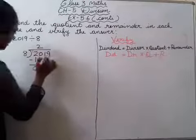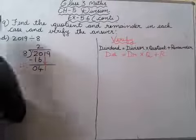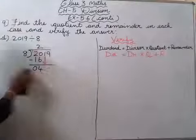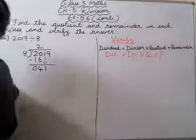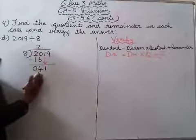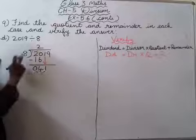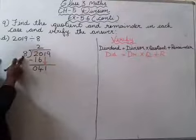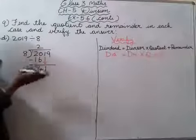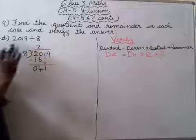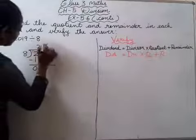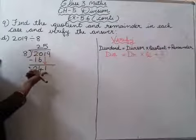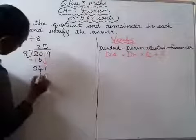Now you have to bring down which number? The next number, that is 1. 1 ko neeche leke aana hai. Baad kya karna hai — 41 aayega. Is mein 8 table mein nahi aayega, se kam number to aayega. So 8 table mein 41 ke pehle jo bhi number aayega tab tak aapko bolna padega. 8 fives are 40. 8 sixes are 48 ho jayega — but yeh 41 toh kaam ka hai, woh nahi le sakti hai. So 8 fives are 40 hai, woh le sakti hai.